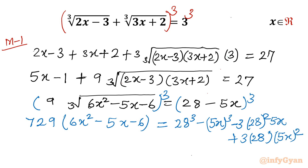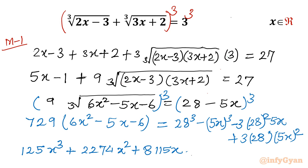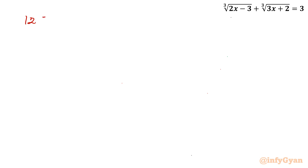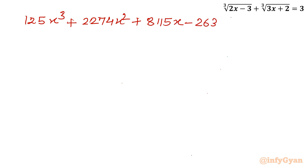Now I will simplify and take all terms to one side. This gives one cubic equation: 125x³ + 2274x² + 8115x - 26326 = 0. Using synthetic division and the rational root theorem, I will solve this.